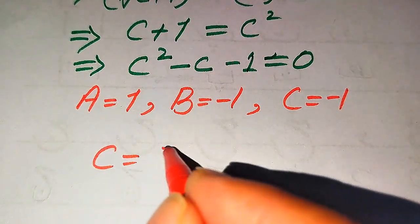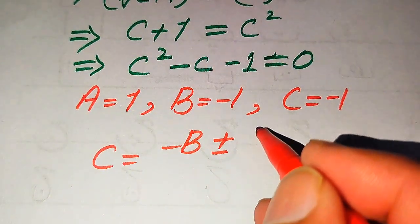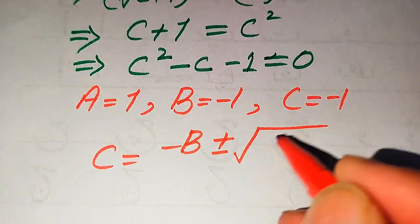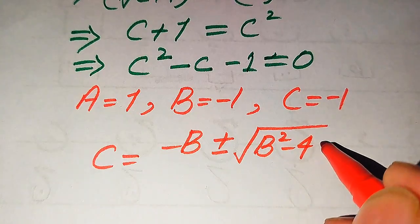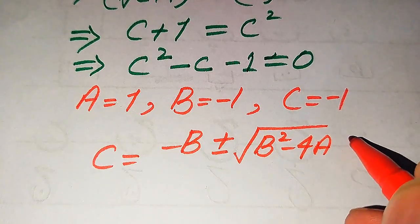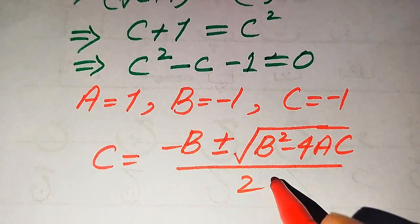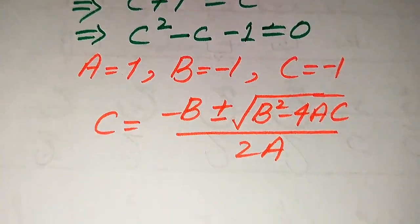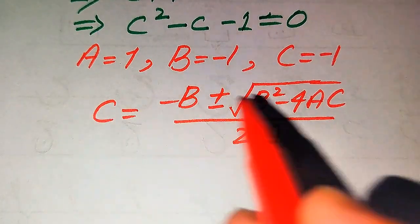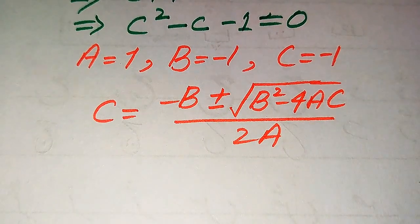We state the quadratic formula as: c equals minus b plus or minus square root of b squared minus 4ac, divided by 2a. Note that this is our small c variable, distinct from the capital C coefficients.